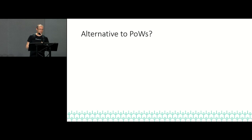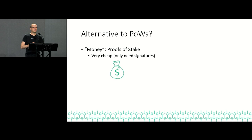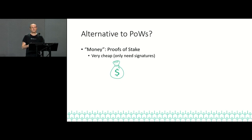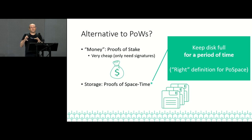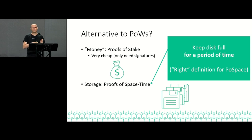What can we use as alternatives to proofs of work? One thing people have already begun using is money — instead of work, we use money directly. This is proof of stake, which is very cheap in terms of miner costs since it only requires signatures. A second option, which is what we're going to use, is proofs of space-time — keeping your disk full for a specified period of time. You might have heard of proofs of space; the constructions will also satisfy our notion of proof of space-time, which is the right definition for what we actually need for cryptocurrencies.